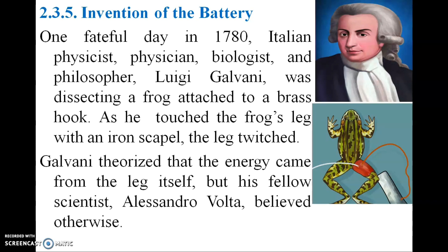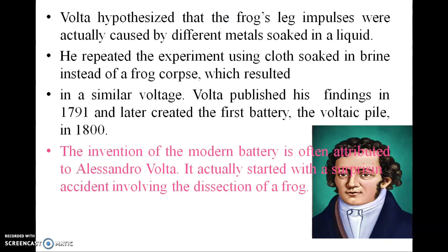In the 1780s, Italian physicist and biologist Luigi Galvani was dissecting a frog attached to a brass hook. When he touched the frog's leg with an iron scalpel, the leg twitched. Galvani theorized the energy came from the leg itself, but his fellow scientist Alessandro Volta believed otherwise. Volta hypothesized that the frog leg impulses were caused by different metals soaked in a liquid. He repeated the experiment using cloth soaked in brine instead of frog tissue, which resulted in similar voltage. Volta published his findings in 1791 and later created the first battery — the voltaic pile — in the early 19th century.